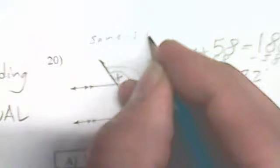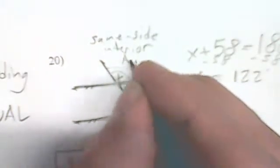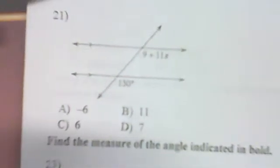122 is our answer. These are called same side interior angles — same side because they're on the same side of the transversal, and interior because they're between the parallel lines. Same side interior angles are supplementary, meaning they add up to 180.